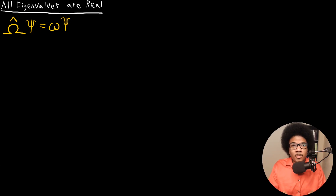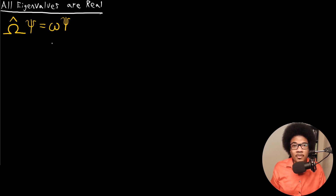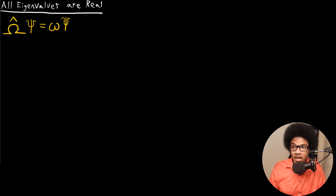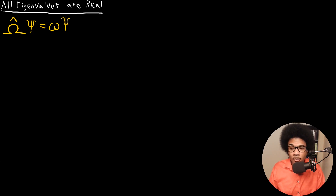In this video, we're going to look at one of the properties of eigenvalues of quantum mechanical operators, specifically that they are real numbers. In the previous lecture, we established that all quantum mechanical operators are Hermitian operators. One of the consequences of that is that the eigenvalues they produce are real numbers. We're going to look at the eigenvalues of an operator omega in a very general sense and use the fact that it is a Hermitian operator to prove that its eigenvalues are real.